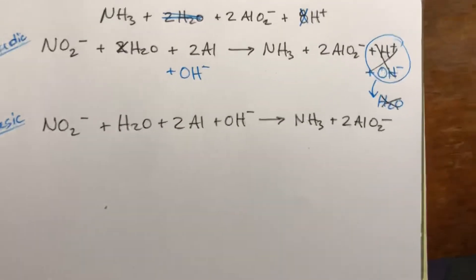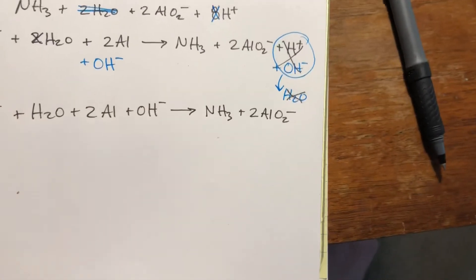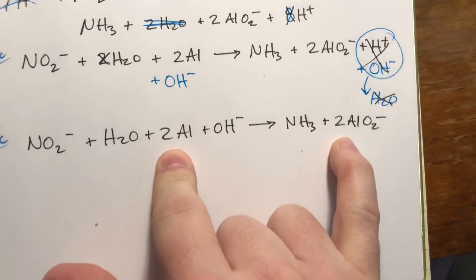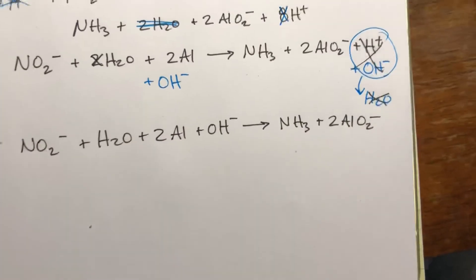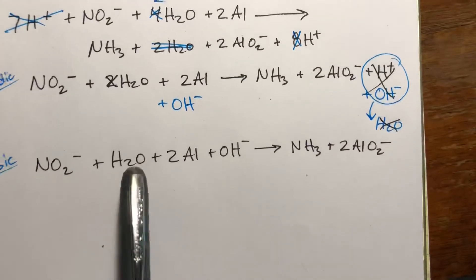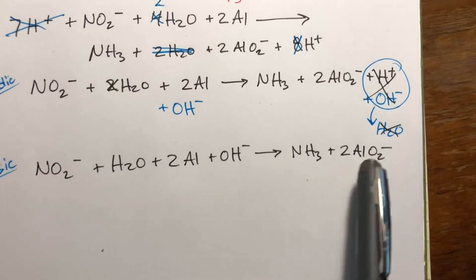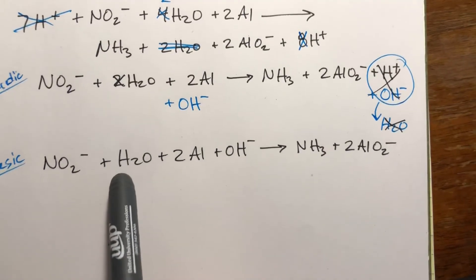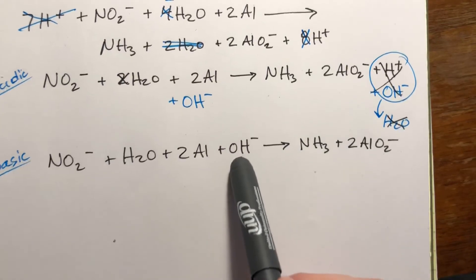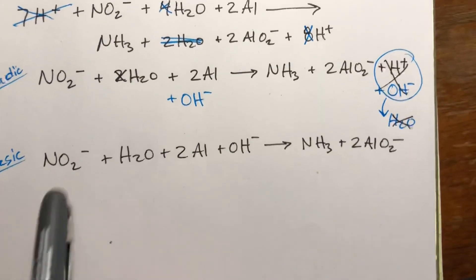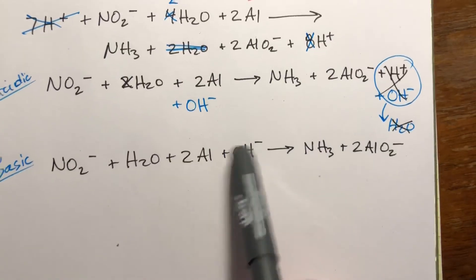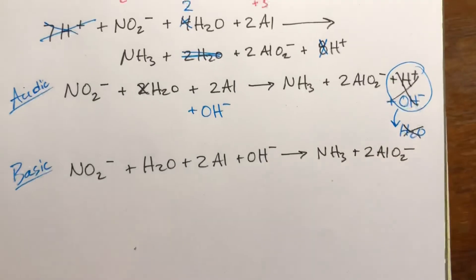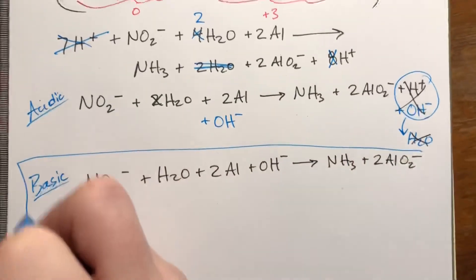So now let's double check everything. One nitrogen, one nitrogen. Two aluminums, two aluminums, so that's encouraging. Okay, oxygens, we have two, three, four. Here we have two times two is four, so that's good. Hydrogens, we have two, three I guess. Here we have three, so that's good. Charges, we have negative one, zero, zero, negative one, so this is negative two overall, and this is two times negative one. This is negative two also, so everything's good. This is our final answer.